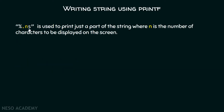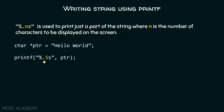If we want to print just a part of the string, we can use %.ns, where n is the number of characters to be displayed on the screen. For example, if we mention five, only the first five characters of the string will be printed — so only 'hello' will be printed on the screen.